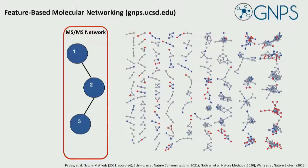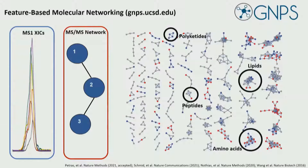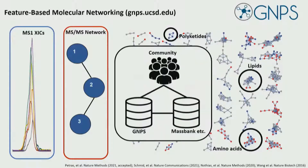But if we know some IDs, we can propagate this to neighboring nodes and say, maybe these are lipids, amino acids, peptides, and so on. In combination with feature-finding tools, we also get relative abundance, which is particularly interesting for statistical questions in a larger context.